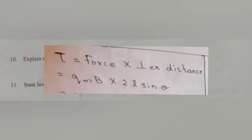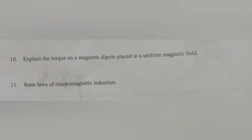Question 10. Explain the torque on a magnetic dipole placed in a uniform magnetic field. Answer: Torque equals force into perpendicular distance equals Qmp into 2l sin theta equals Qm 2lb sin theta equals Nb sin theta. Torque equals m into b.